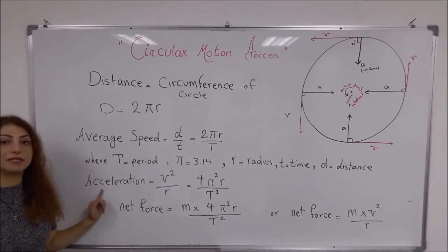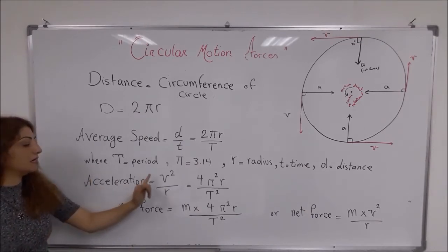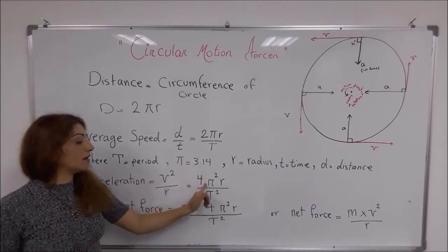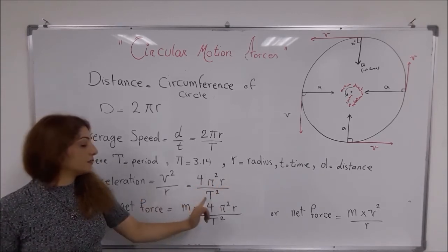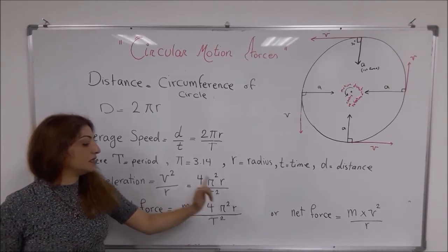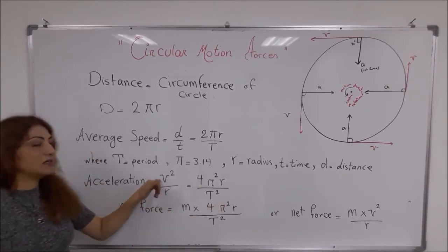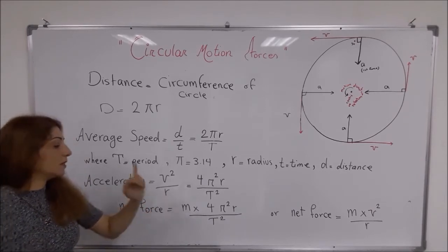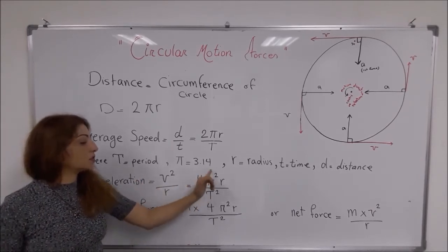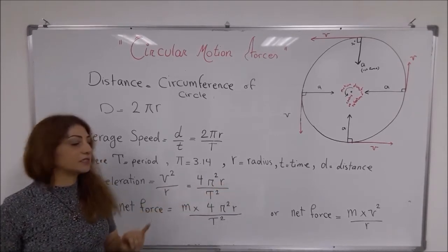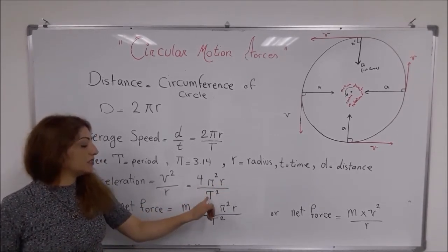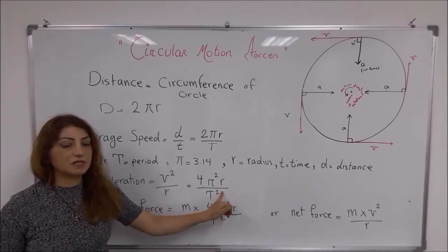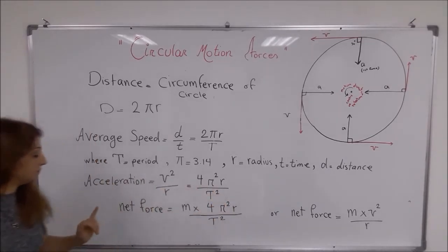Acceleration: to calculate the acceleration of objects, you can find it by v² over r. Or, you can use 4π²r divided by T², which means velocity squared divided by the radius of the circle, or 4 times pi squared times the radius of the circle divided by T squared, where T is the period.